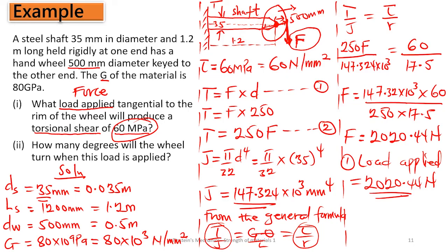Now for Part II, which asks by how many degrees the wheel will turn when the load is applied. Now that we know the load, we need to find the angle of rotation — either in radians and then convert to degrees. We can use two combinations of the general torsion formula to calculate theta. We can combine the first and second parts, or the second and third parts of the formula. We'll use both to verify.